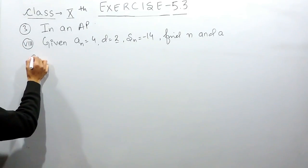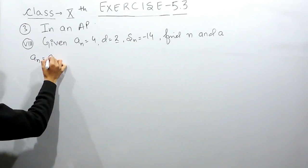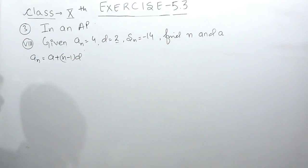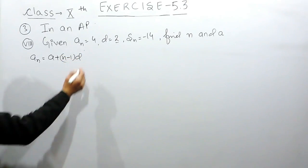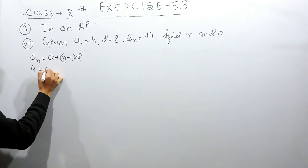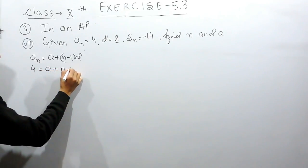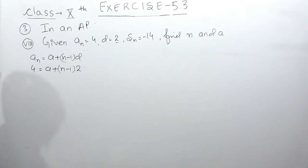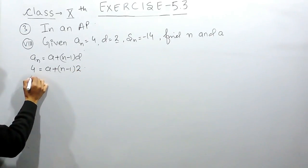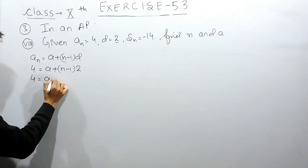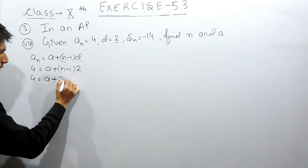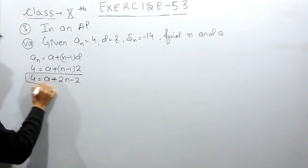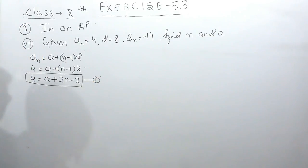To find the nth term we have a formula. The nth term is given as 4, and a plus n minus 1 into common difference, which is given as 2. So this gives us a plus 2n minus 2 equals 4. This is our first equation.